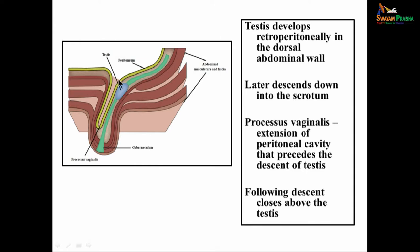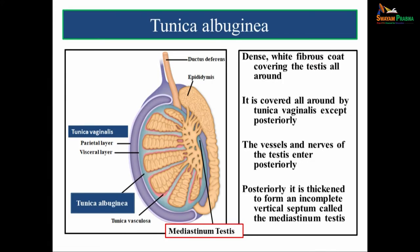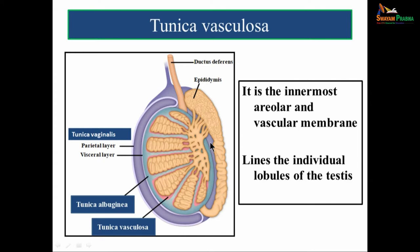The tunica albuginea is a dense white fibrous coat covering the testis all around. It is covered by tunica vaginalis except in the posterior part, where the vessels and nerves of the testis enter. Posteriorly, the tunica albuginea is thickened to form an incomplete vertical septum called the mediastinum testis.